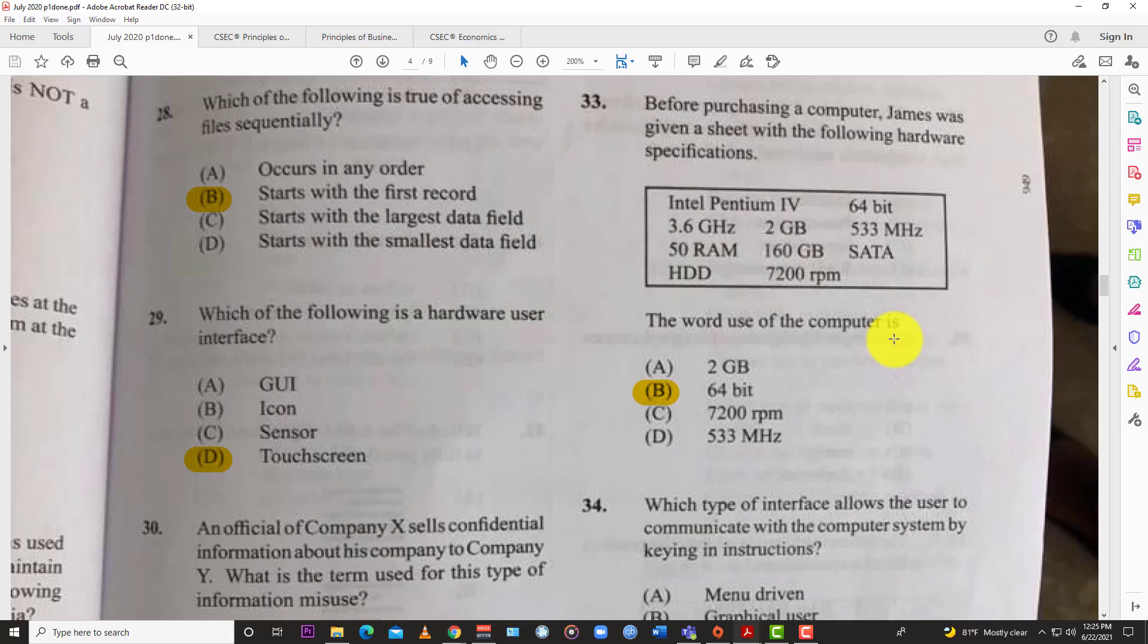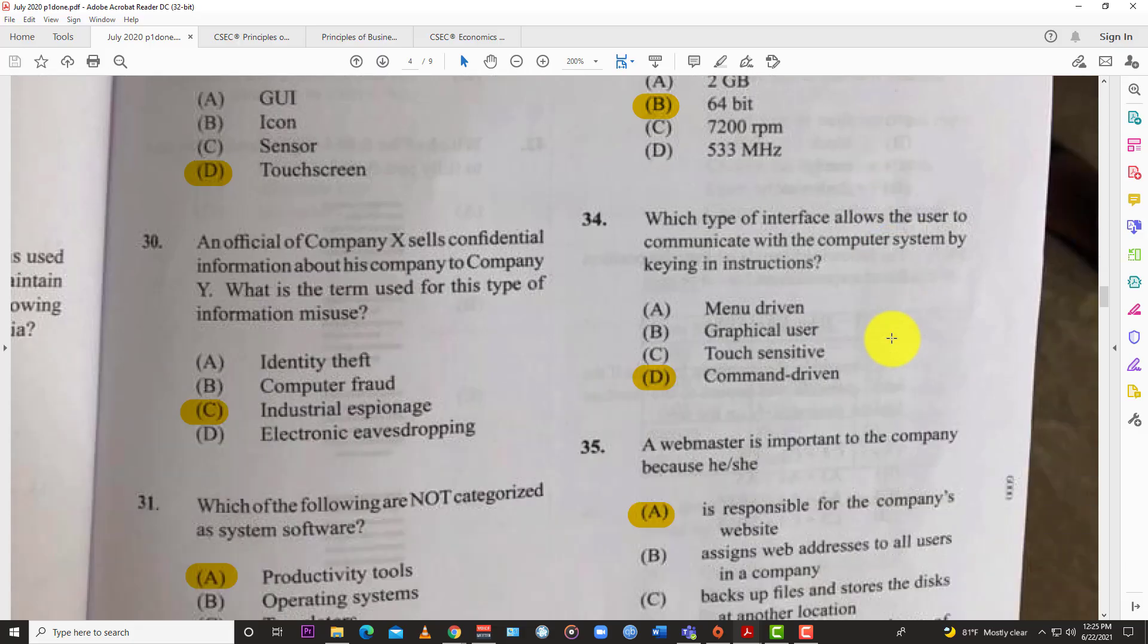Question 34: Which type of interface allows users to communicate with computer systems by keying in instructions? When you're talking about typing, we know that one is D, command driven. You have to type in everything in a command line to get things done.